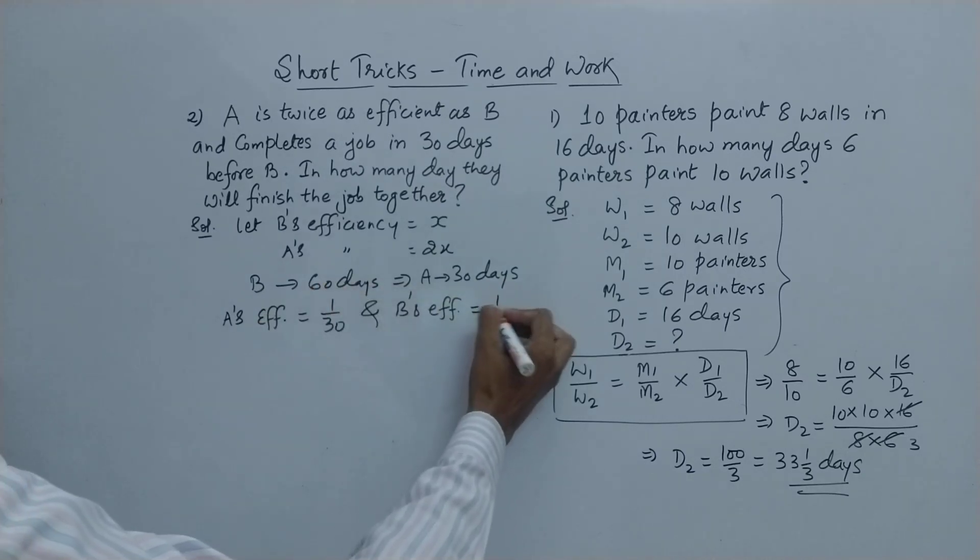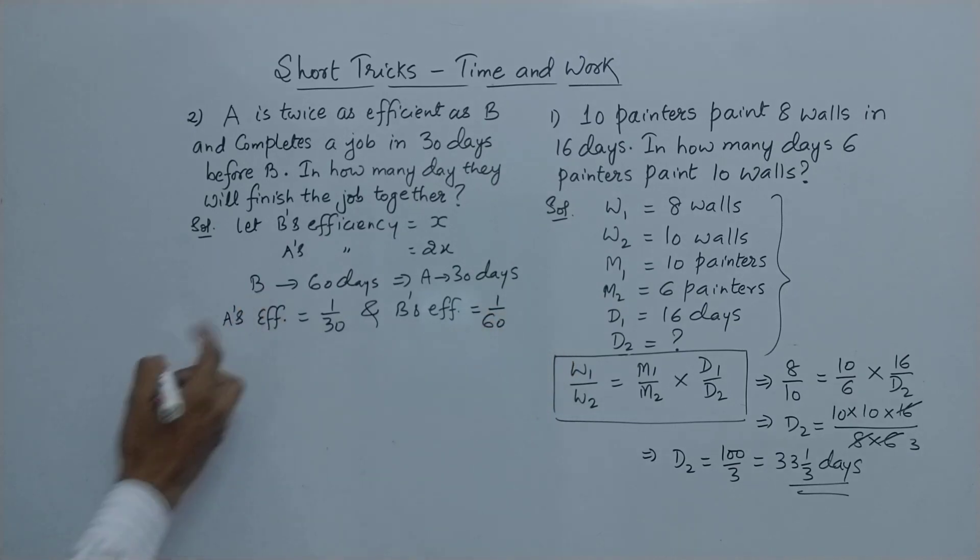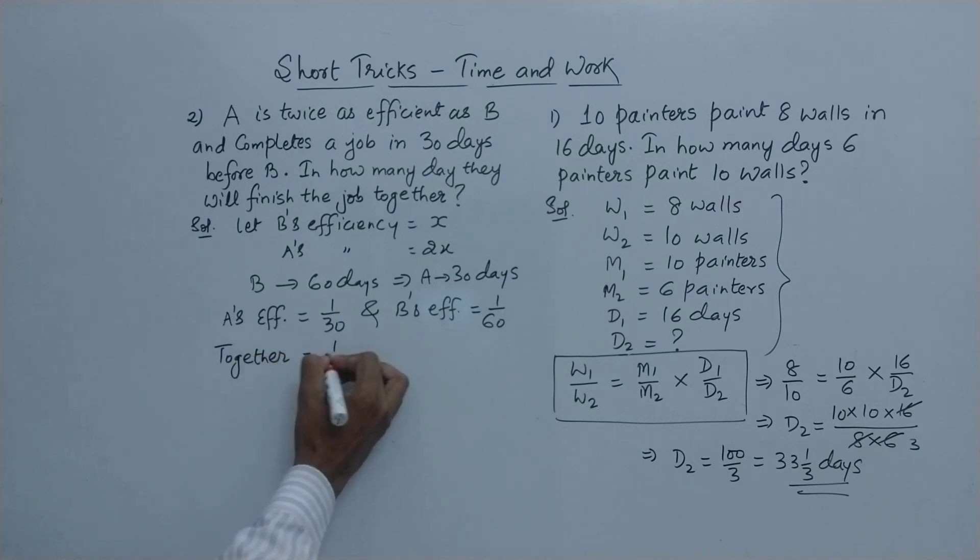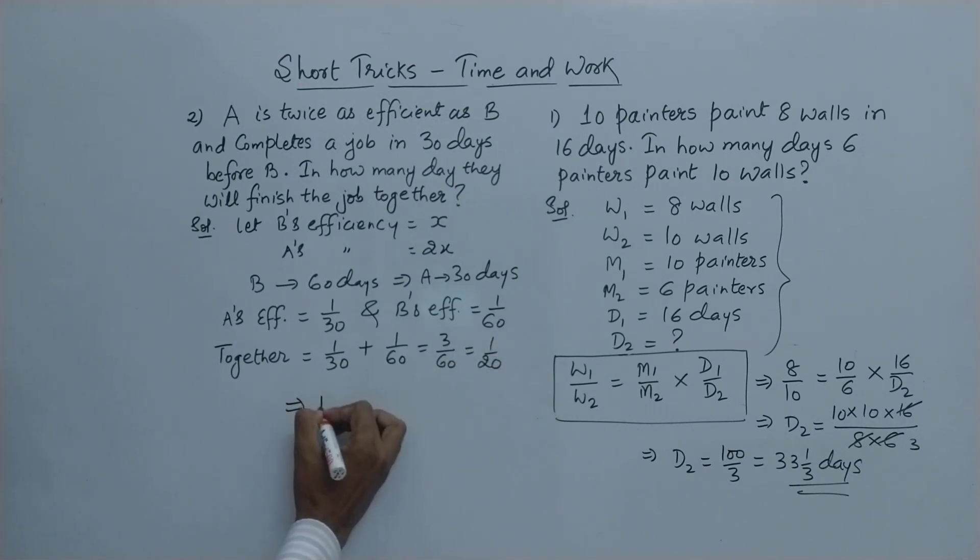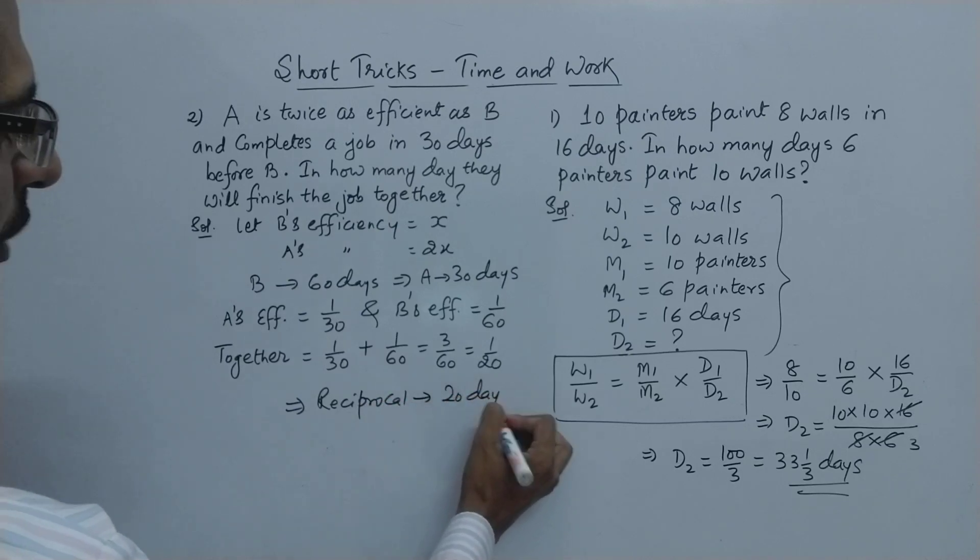Now we need to find out the work done together, so just add the total efficiency, that is the efficiency of A and B together. So 1 by 30 plus 1 by 60, this is 2 plus 1, 3 upon LCM 60, which is 1 upon 20. And here we have an answer. Take the reciprocal of this which will give you the answer of this important question. 20 days will be your answer for this amazing time and work problem.